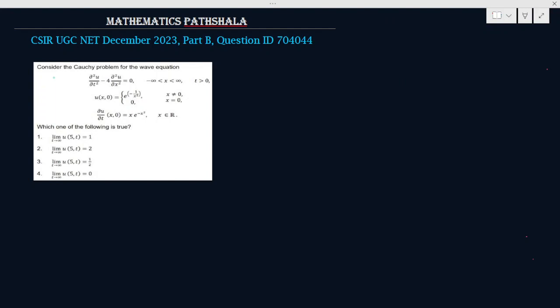Here we have to consider the Cauchy problem for the wave equation: del²u/dt² minus 4 into del²u/dx² equals 0, where x belongs to minus infinity to plus infinity and t is greater than 0. With these initial conditions, u(x,0) equals this, and del u/del t at (x,0) equals x into e to the power minus x square, where x belongs to the set of real numbers. We have to find which one of the following four options is true.